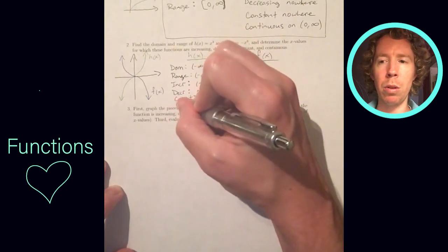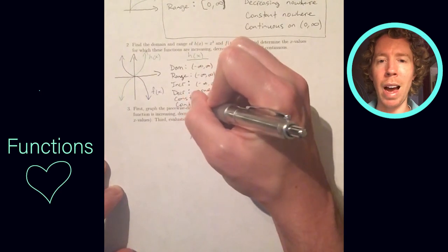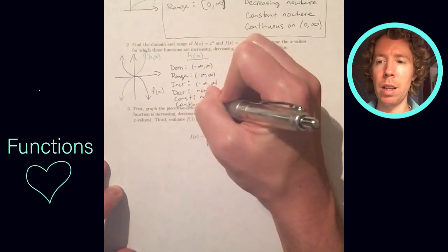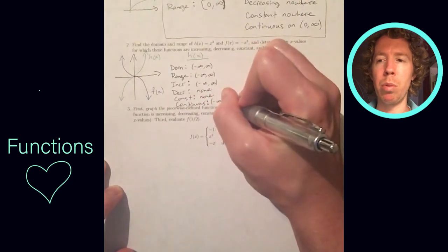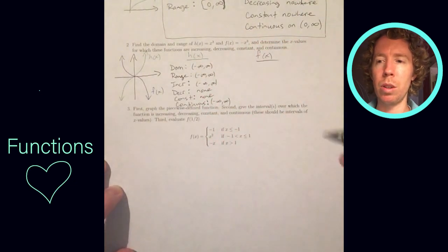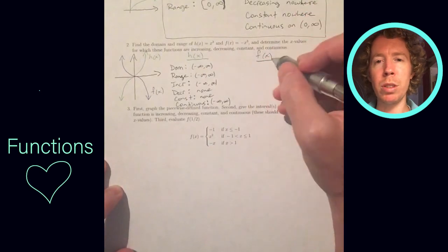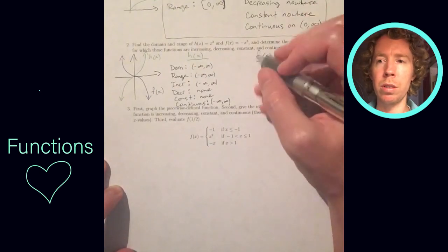As you move from left to right, the y values never go down. It's not flat and constant anywhere. It's continuous everywhere because the graph isn't broken at any point. So those questions aren't very interesting questions for this function.